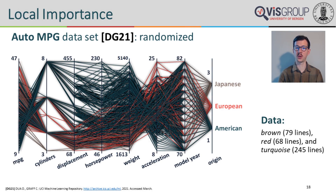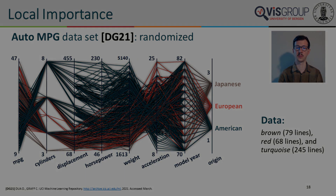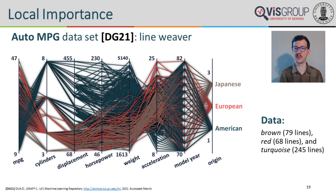To demonstrate our technique for locally varying importance functions, we use a parallel coordinate plot from the UCI machine learning repository containing properties of cars such as origin, number of cylinders, weight, horsepower, etc. from cars produced between 1970 and 1982. When randomized, compact clusters like the red European cluster or the brown Japanese cluster bundle are difficult if not impossible to perceive. When using LineWeaver instead, it immediately becomes visible that Japanese and European car models have similar low displacement, horsepower, and weight, and therefore longer acceleration times, whereas American cars cover a much wider spectrum. In contrast to the compact ordering of displacement, horsepower, weight, and acceleration, all three clusters are equally broad for the model year dimension and are therefore averaged instead of layered.